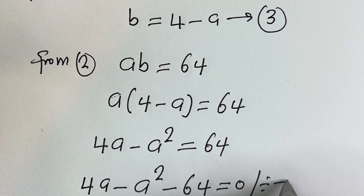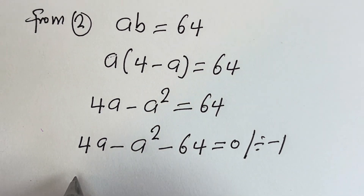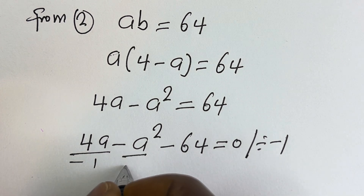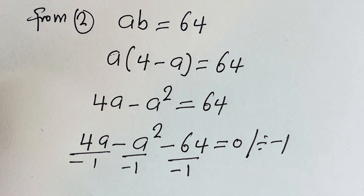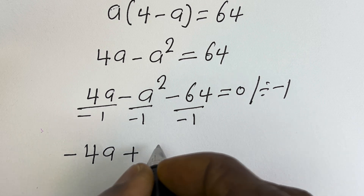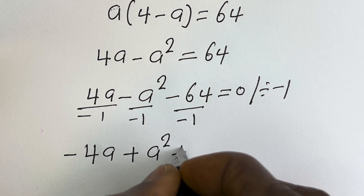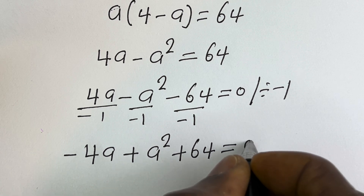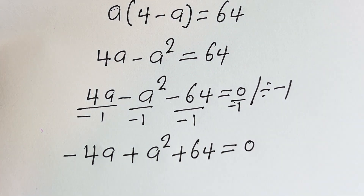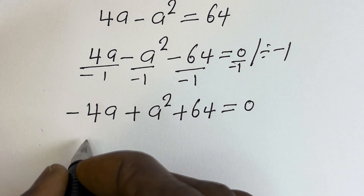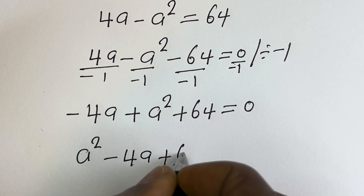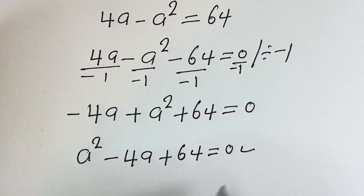Let's divide all through by minus 1: each term divided by minus 1 gives us minus 4a plus a squared plus 64 equals 0. Because 0 divided by minus 1 is equal to 0, we have a squared minus 4a plus 64 is equal to 0. This is a quadratic equation.